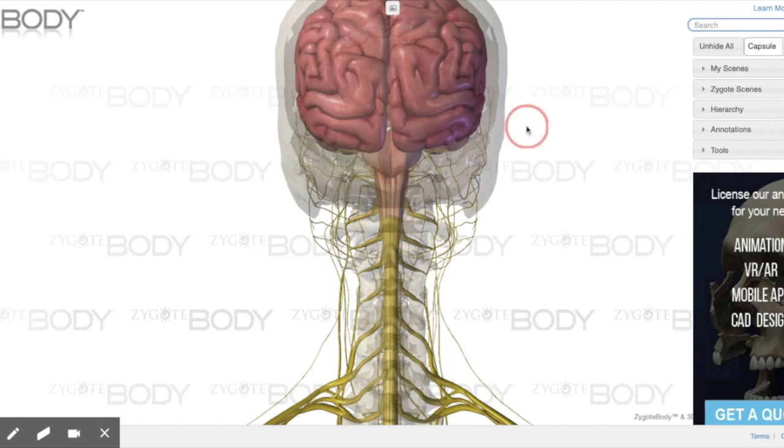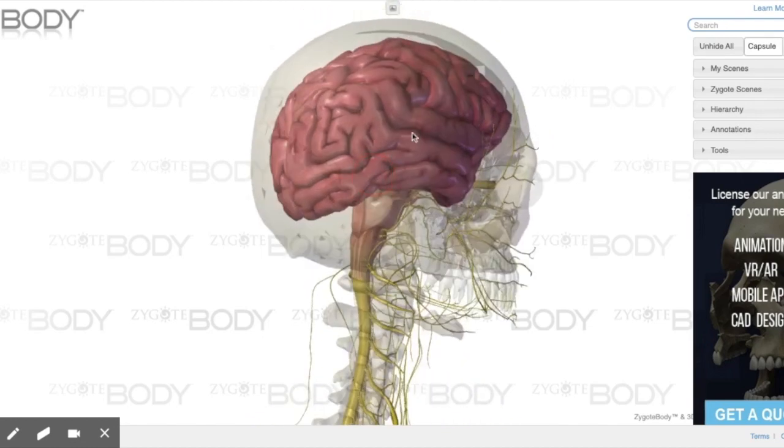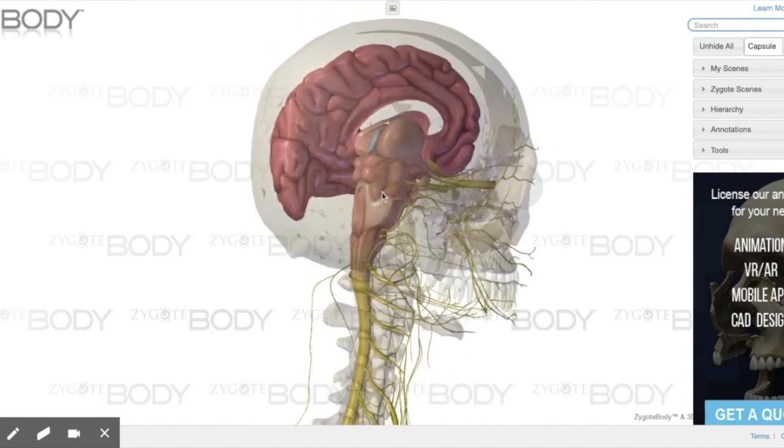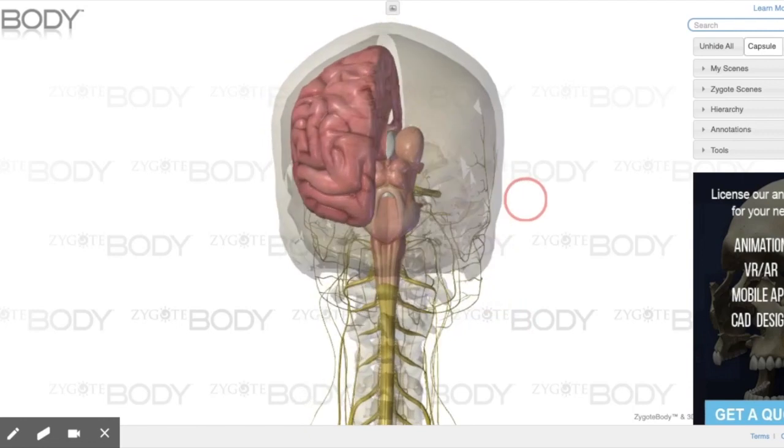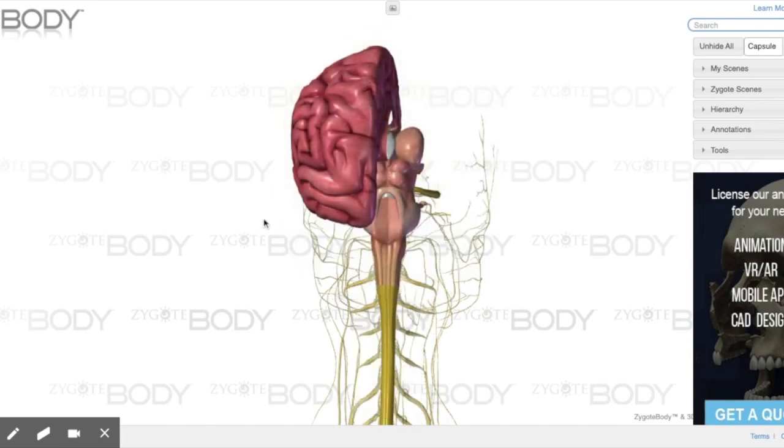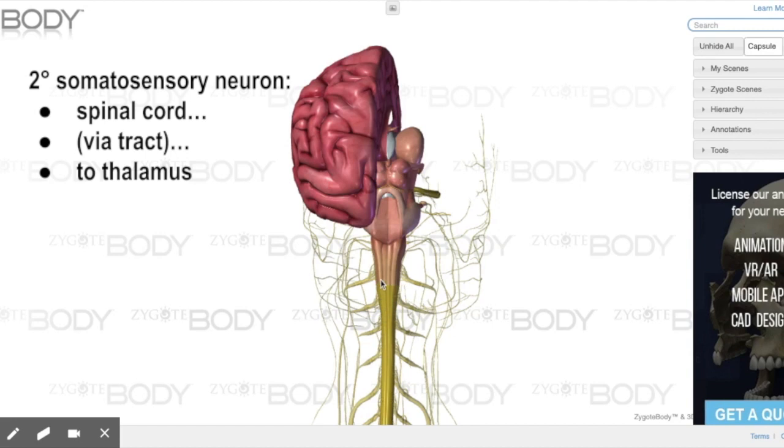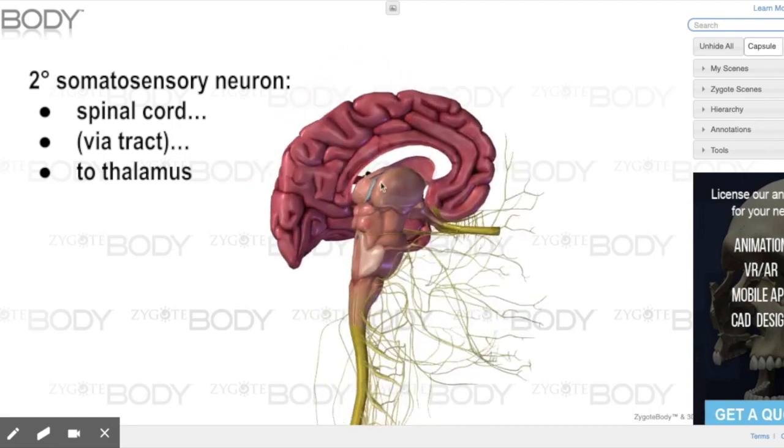Now to show you this location where these neurons end, I'm going to have to strip away portions of the brain like so. So I actually took away the entire cerebral cortex to make things a little bit easier to see. And I'll remove the remaining hint of the skeletal system. So the secondary sensory neuron brought the signal up the spinal cord, across and up the brainstem, and will end at this location right here of the diencephalon called the thalamus.